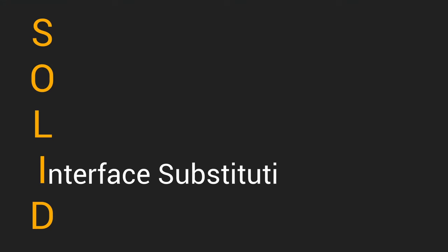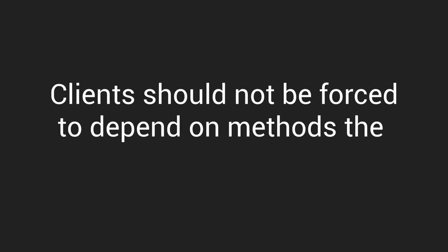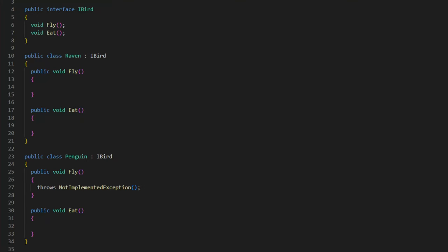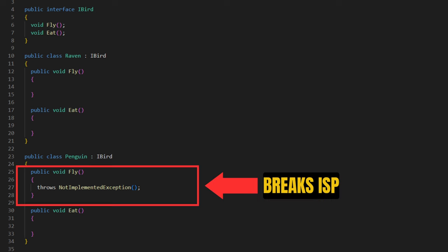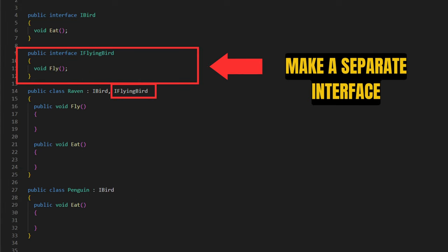Next we have the ISP — the Interface Segregation Principle. This states that no client should be forced to depend on interfaces it doesn't use. It's better to have lots of small, individually purposed interfaces rather than one big general interface. The problem a general interface creates is similar to the Liskov problem: a class ends up implementing an interface with a bunch of methods that don't do anything — methods that just throw a not-implemented exception. Using the bird example, if we have an iBird interface with Eat and Fly methods, a raven is fine — it eats and flies. But a penguin can't implement iBird because it only eats, not flies. The fix is to split those into two interfaces.